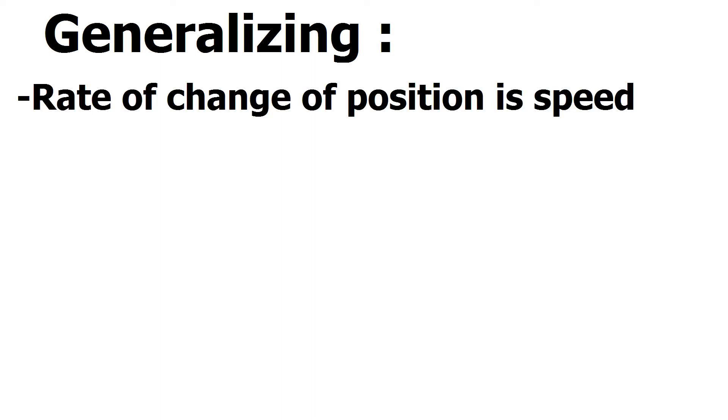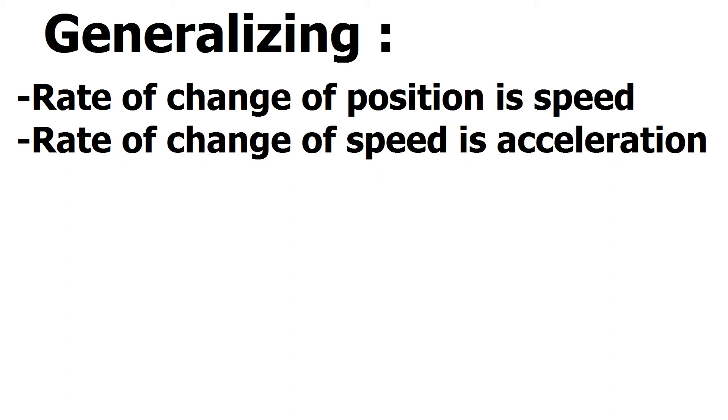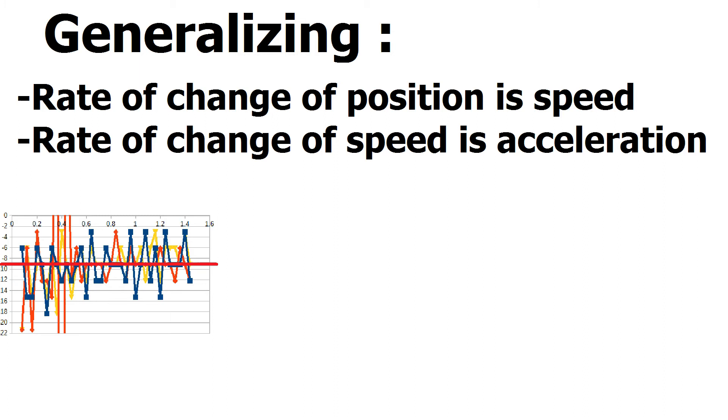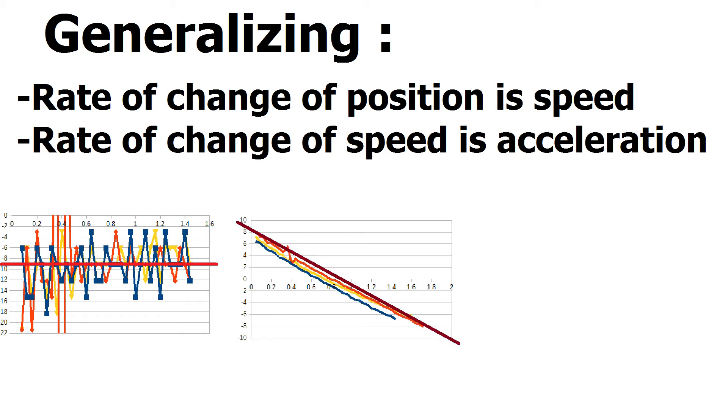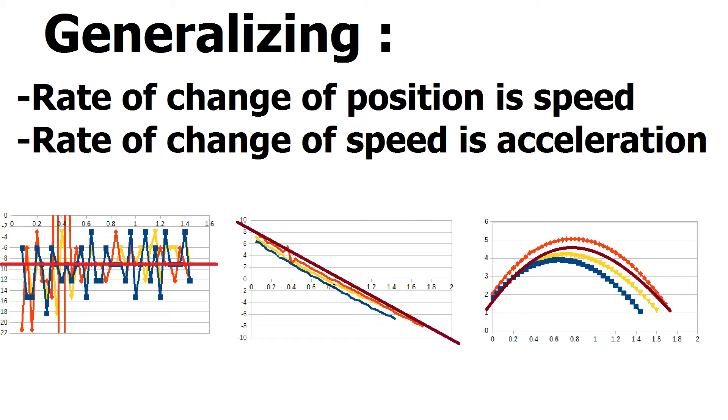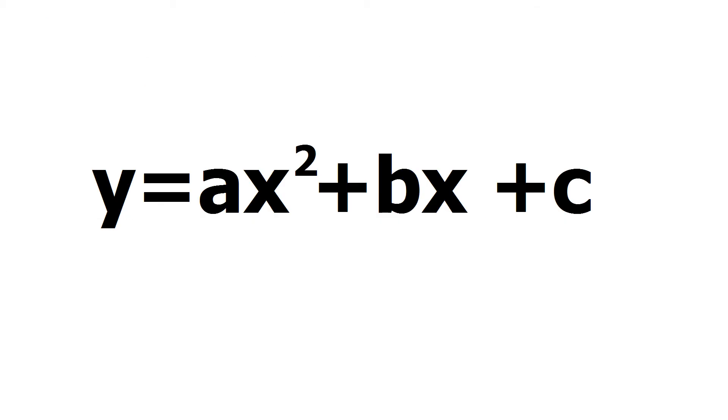From measurements we can deduce something more general. Because the rate of change of position is speed and the rate of change of speed is acceleration, we can see that, because we measure that the acceleration is constant, speed will change linearly and thus position of thrown object is a parabola and the position over time can be expressed as a quadratic function.